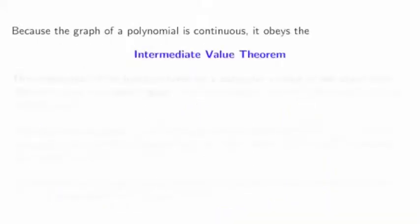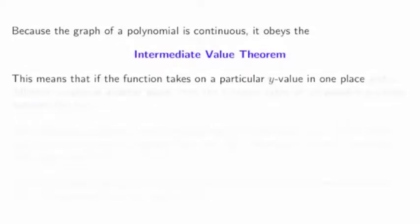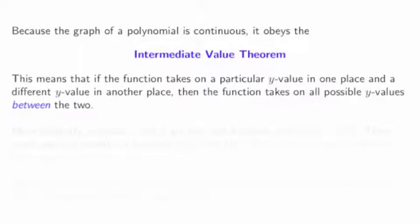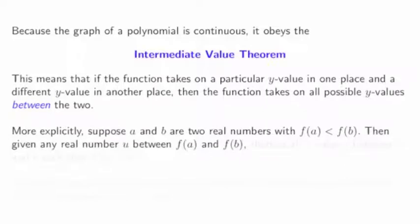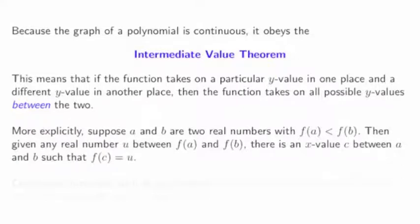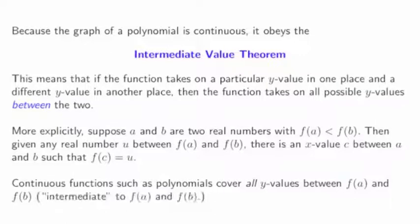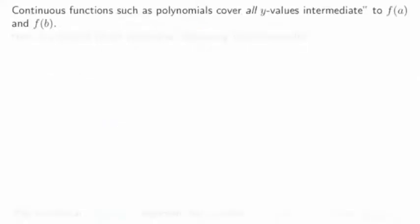Because the graph of a polynomial is continuous, it obeys the intermediate value theorem. This means that if the function takes on a particular y value in one place and a different y value in another place, then the function takes on all possible y values between the two. More explicitly, suppose we have a and b as two real numbers where f(a) is less than f(b). Then given any real number u between those two y values, there's an x value c between a and b so that f(c) equals u. Continuous functions, such as polynomials, cover all the y values between f(a) and f(b) — all the values intermediate to f(a) and f(b).